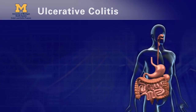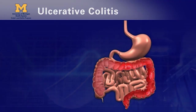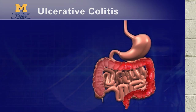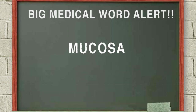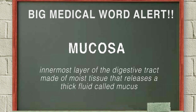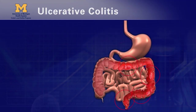Ulcerative colitis causes inflammation in the innermost layer of the colon, the mucosa. Only when ulcerative colitis becomes very severe or toxic does it affect all of the layers of the colon. Unlike Crohn's disease, ulcerative colitis only affects the colon and is continuous, meaning that the colon is affected from the rectum — the last part of the colon — and continuously upstream.